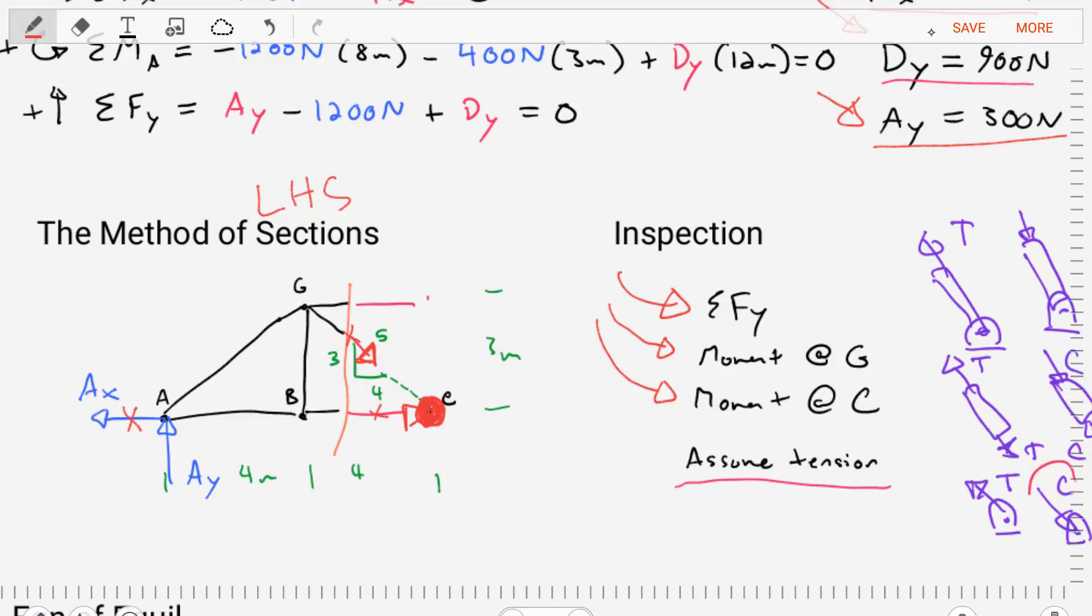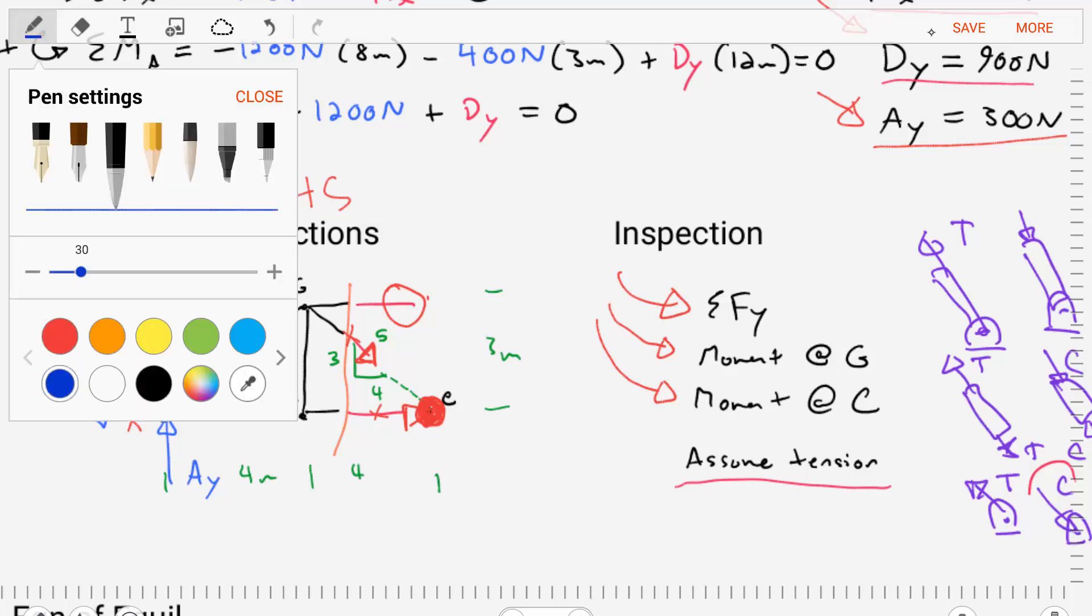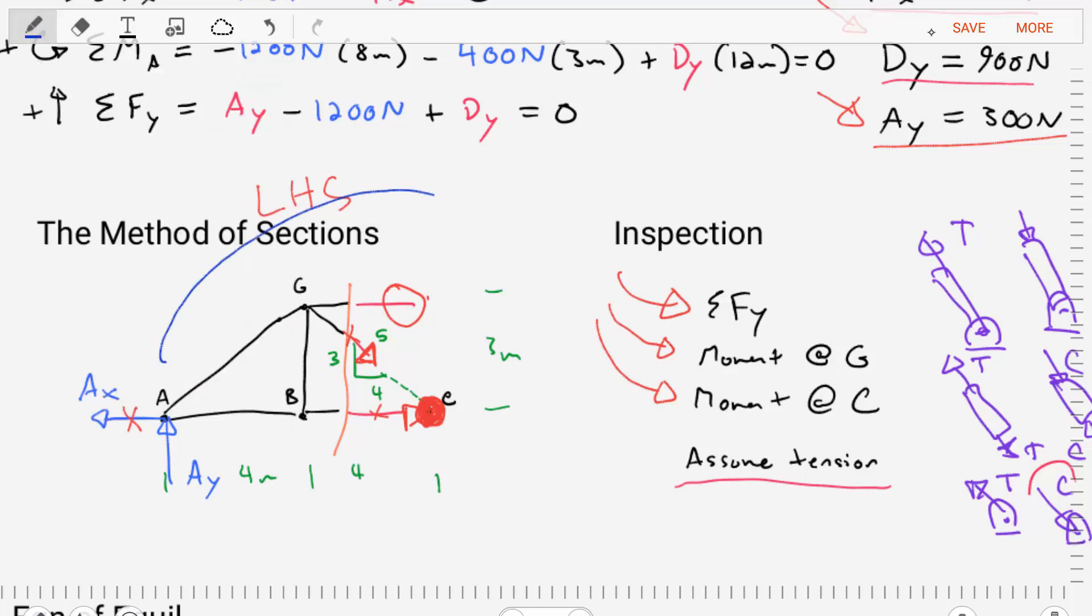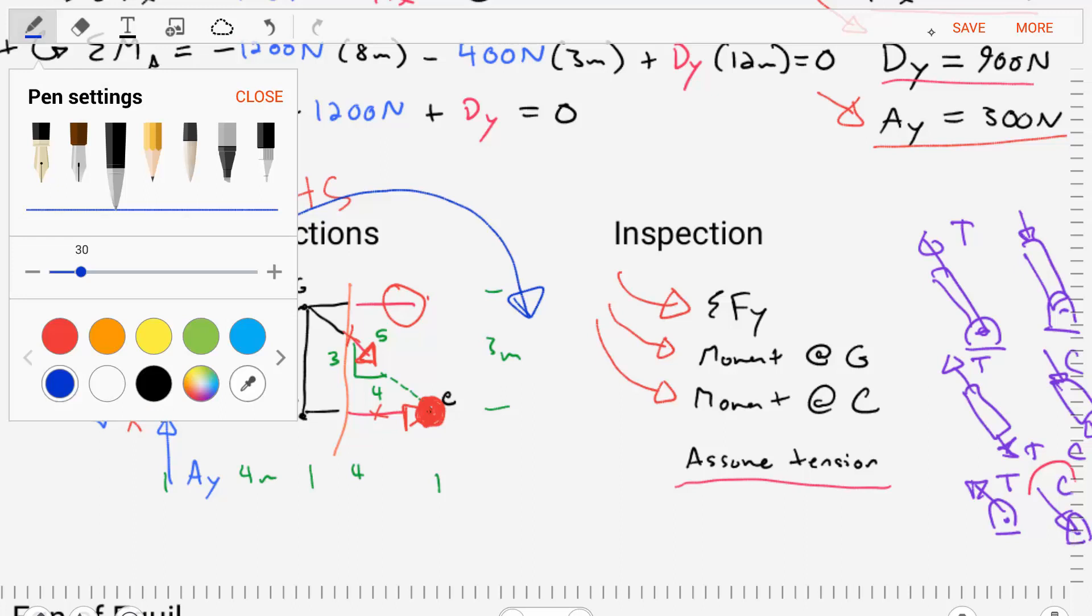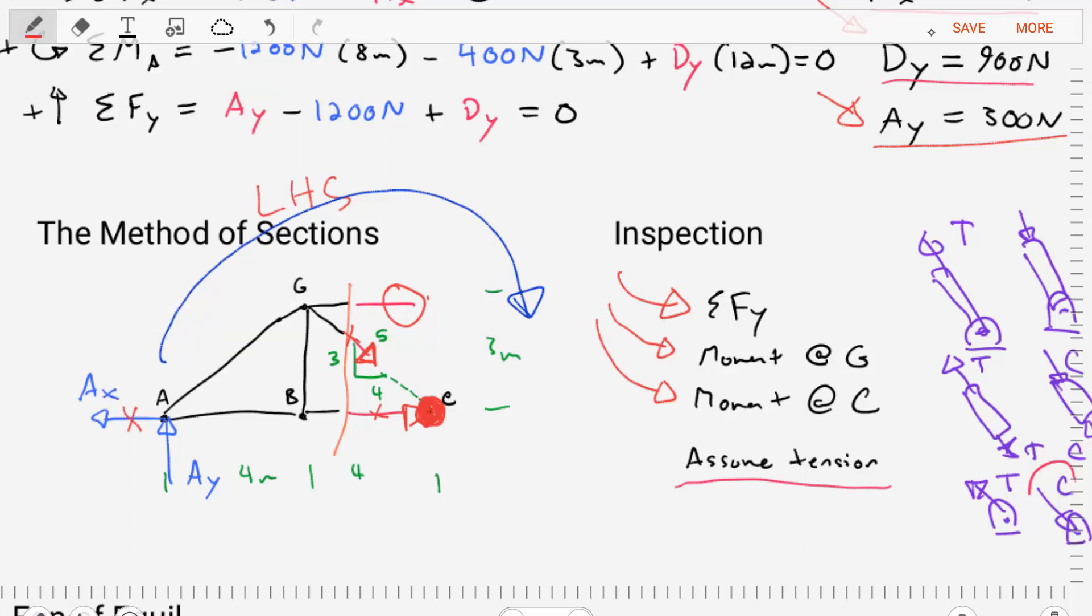We also know that the one thing that we could control is the force in this member, I think this is member GE. The force in this member, and the known that we have is we know that AY is going to cause a clockwise sense of rotation. So the only way we can counteract it is if the force in this member GE is going in to G.